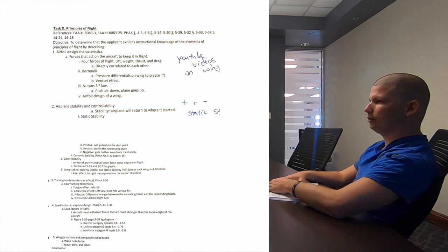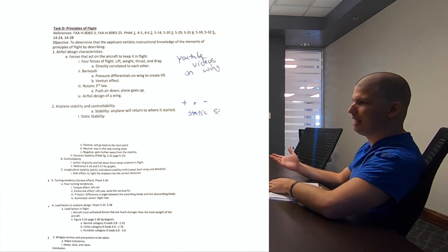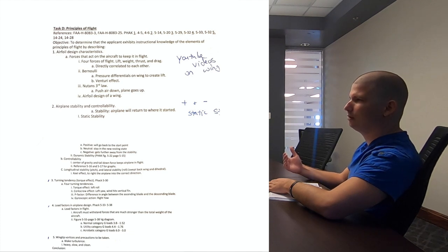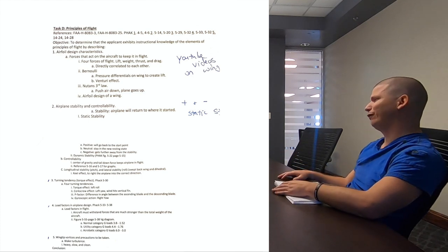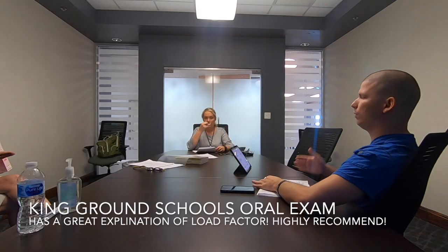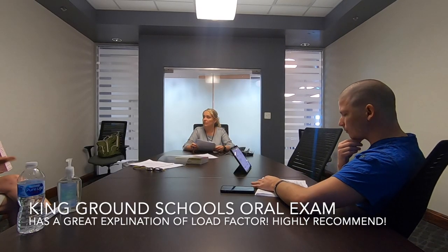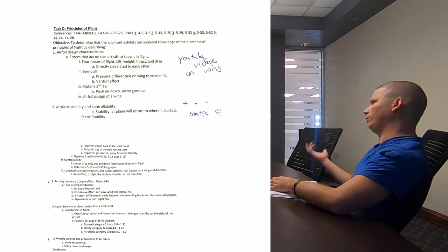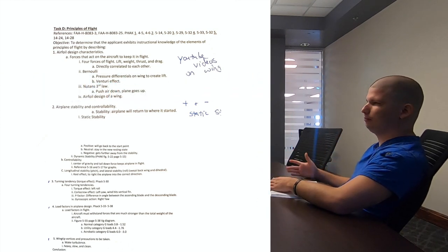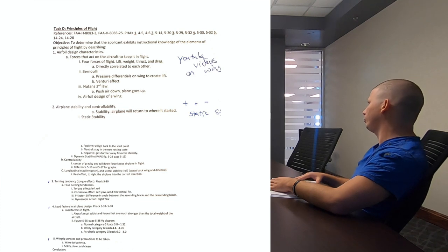Wake turbulence and precautions — this is relevant at Sanford. Land past the large aircraft's touchdown point and take off before it. Don't get below their flight path because wake turbulence falls. Also think about crosswind — if you're on Runway 9 Center and an Airbus is landing on a parallel runway with a crosswind, that wake turbulence can blow over to your runway. I brought up a real example that happened a couple months ago.